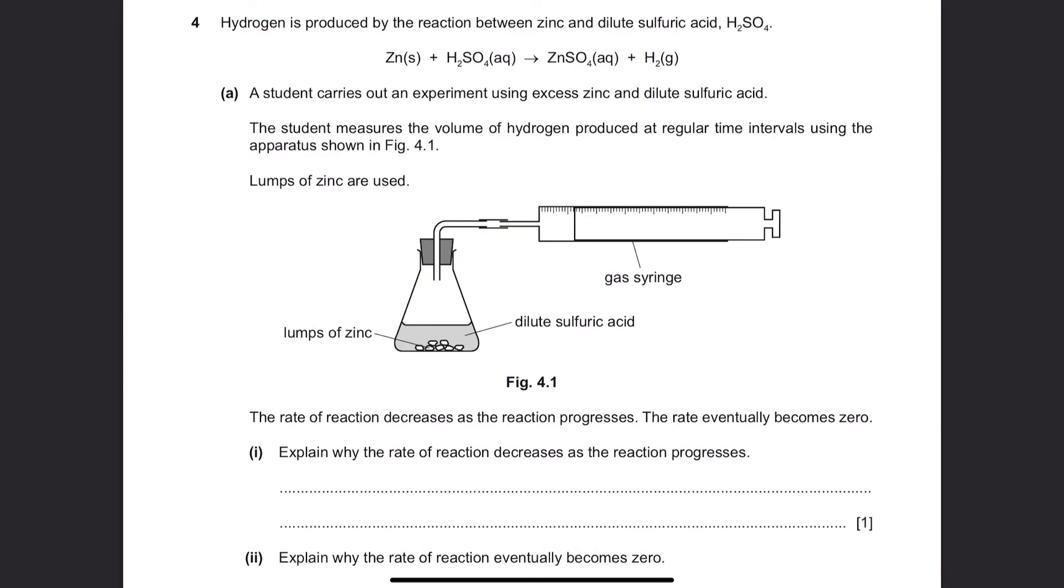Question 4. Hydrogen is produced by the reaction between zinc and dilute sulfuric acid. Question A. A student carries out an experiment using excess zinc and dilute sulfuric acid. The student measures the volume of hydrogen produced at regular time intervals using the apparatus shown in Figure 4.1. Lumps of zinc are used. The rate of reaction decreases as the reaction progresses. The rate eventually becomes zero.